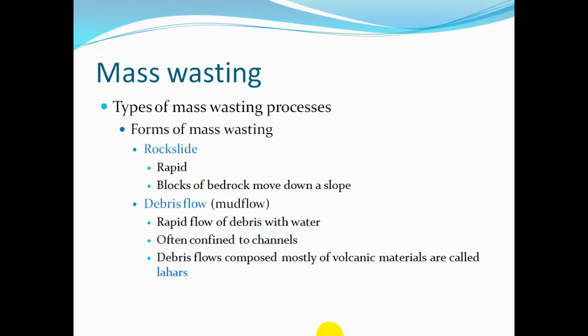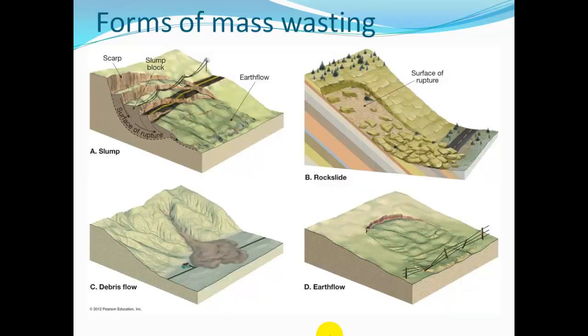Rock slide happens very rapidly — blocks of bedrock move down a slope. Debris flows and mud flows are rapid flows of debris with water, often confined to channels like river channels. Debris flows composed mostly of volcanic materials are called lahars — a mixture of ash, mud, and debris. Here's a diagram: the slump at the top, then a rock slide where bedrock slides straight down the slope, then earth flow as a very viscous flow of materials, and debris flows usually down a channel.